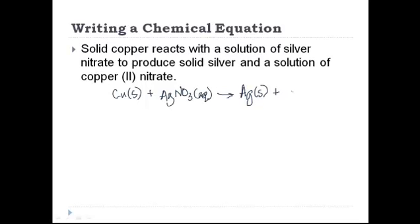And a solution of copper two nitrate. If you're feeling uncertain about what to do with a formula, stop and just do it separately. We'll do this one separately. Cu2+ is 2 plus, nitrate is NO3 minus.